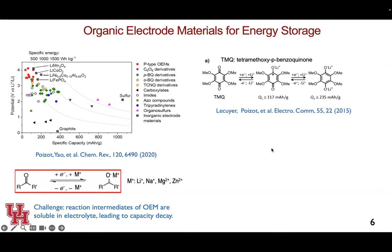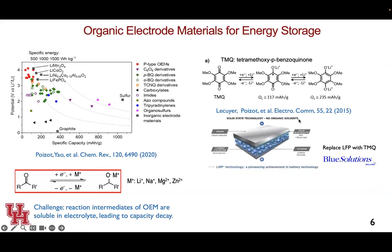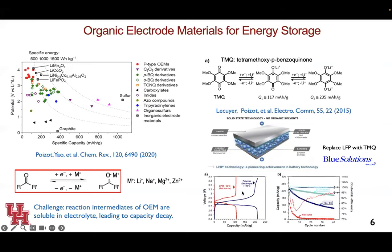One idea is to combine organic materials with solid-state electrolytes. For example, work from Professor Poirier's group showed a molecule called TMQBQ (tetramethyl-oxy-benzo-quinone), which undergoes a two-electron reaction with very high capacity over 200 mAh/g. They replaced the cathode with this organic molecule and used a PEO-based solid electrolyte to form solid-state cells. Compared to traditional carbonate-based liquid electrolytes, the solid-state electrolyte performed much better — twice the capacity — and cycling stability was improved. However, PEO becomes slightly liquid at higher temperatures, so capacity decay was still observed.